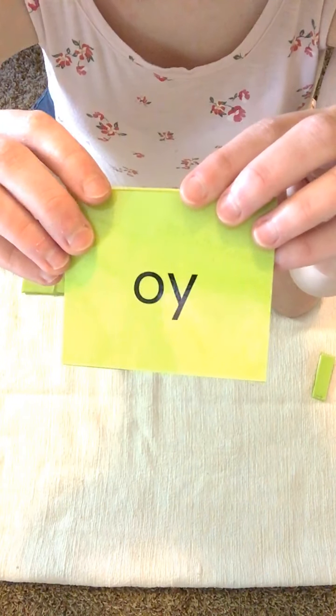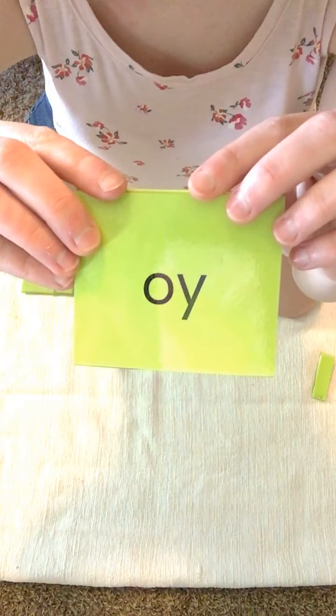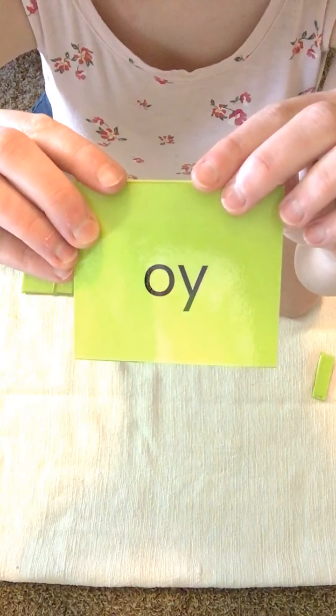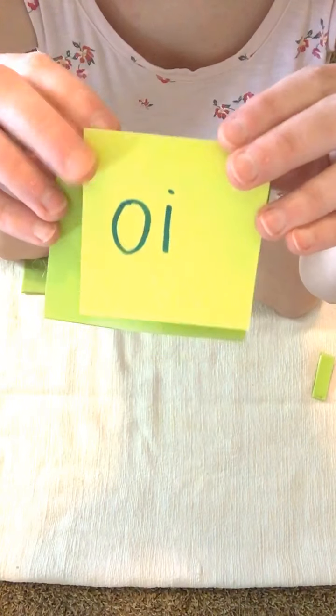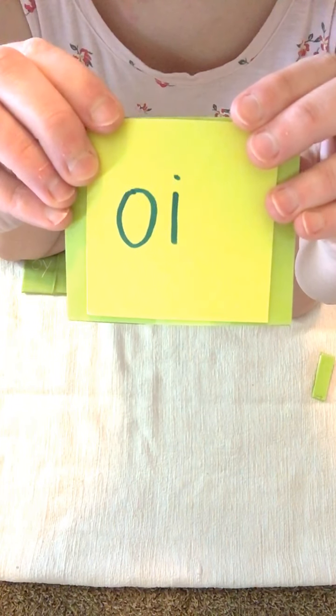Hi friends! Today we are going to do the alternate spelling for OY which says OY. It only has one alternate spelling and that is O-I.